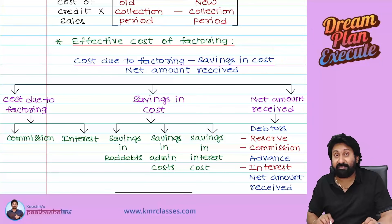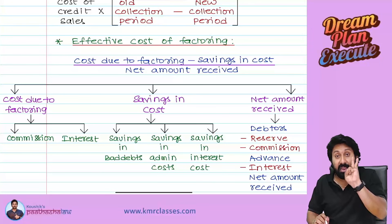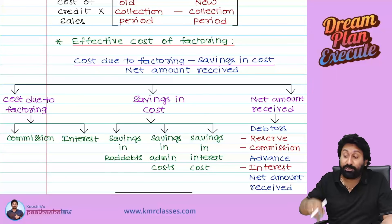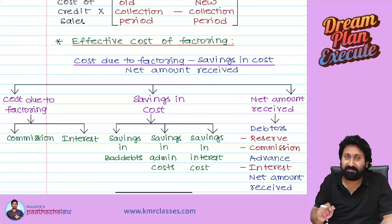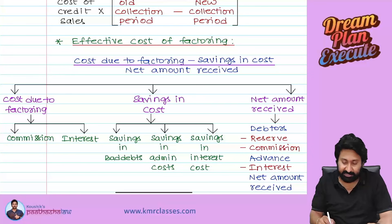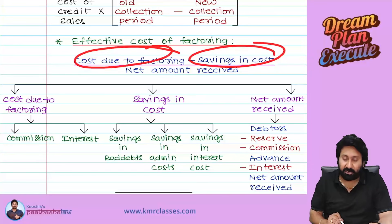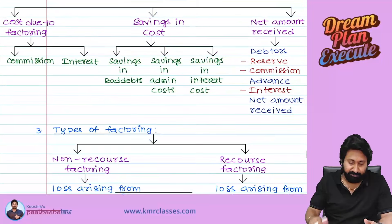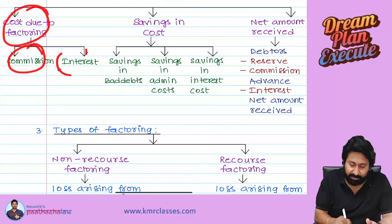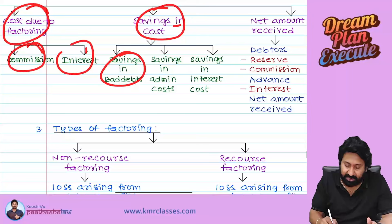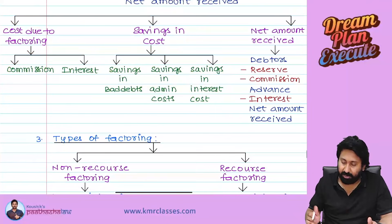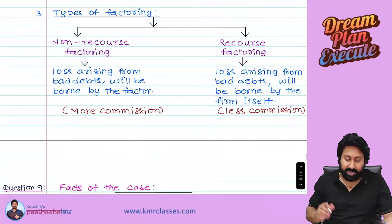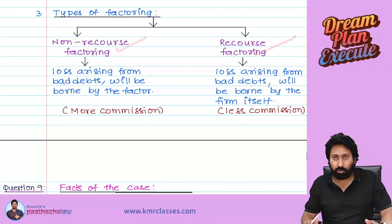Savings include: bad debt savings, collection cost savings, and administrative cost savings — because without factoring you would appoint staff and pay administrative costs. The cost-benefit analysis is: cost of factoring minus benefits, divided by net amount received. Costs = commission + interest; savings = bad debt + admin cost + interest savings.